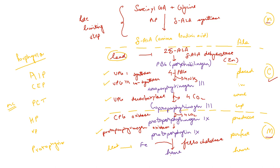First is condensation of succinyl-CoA with glycine to form delta-ALA, occurring with enzyme delta-ALA synthase, which requires PLP or pyridoxal phosphate. This is the rate-limiting step of heme synthesis. Delta-ALA enters the cytosol and two molecules condense to form porphobilinogen in the presence of delta-ALA dehydratase, a zinc-containing enzyme inhibited by lead.